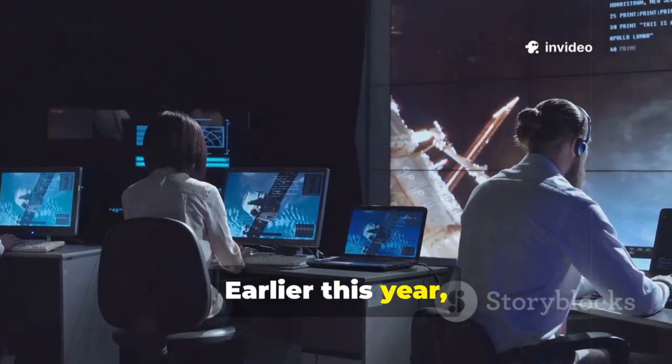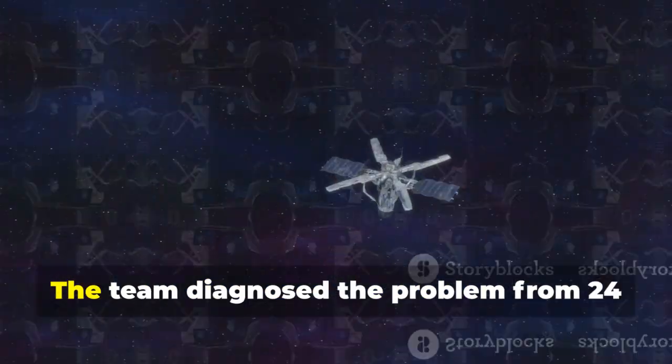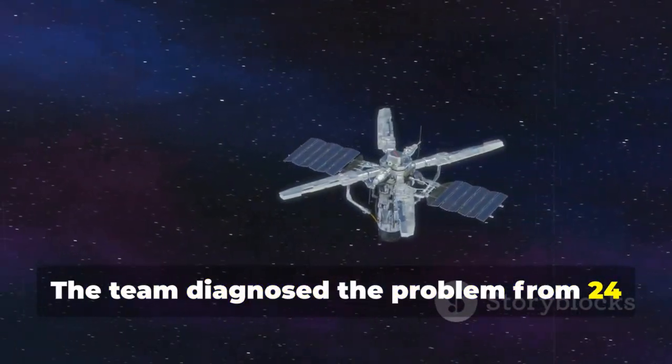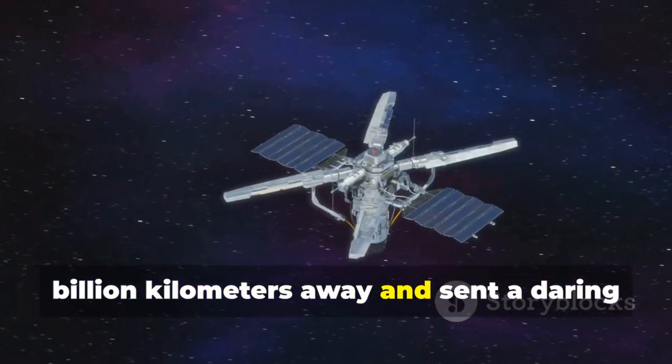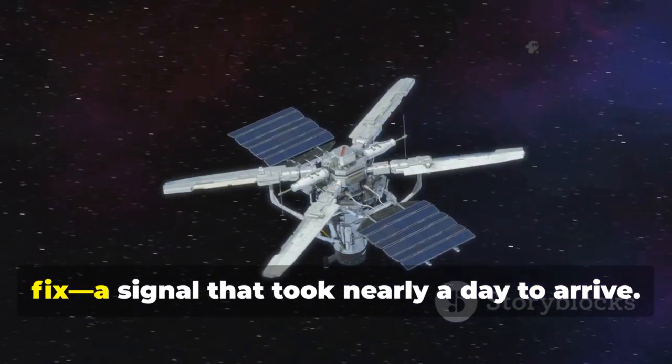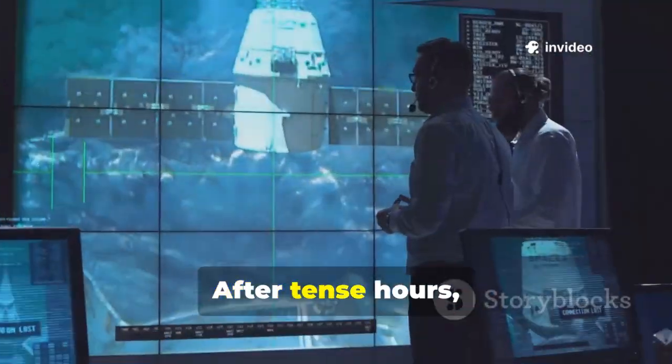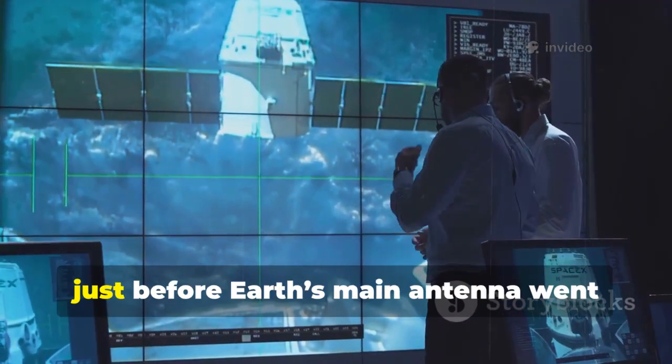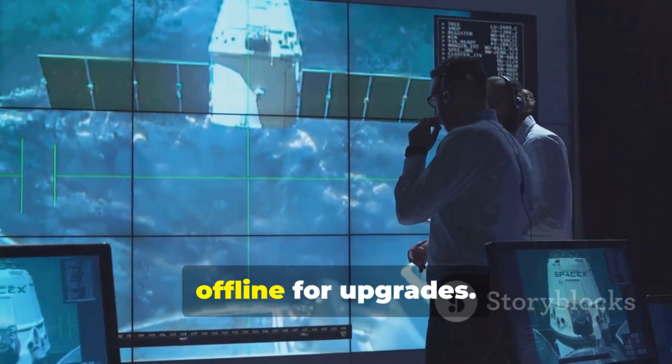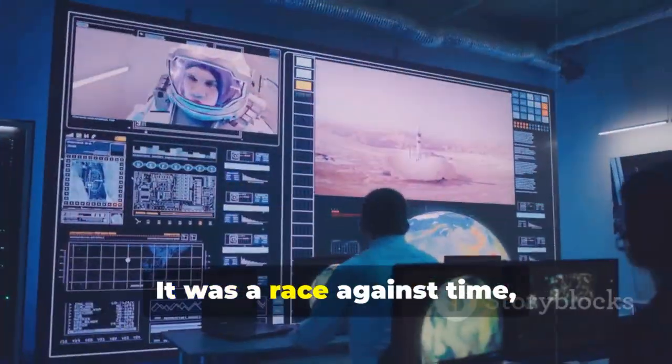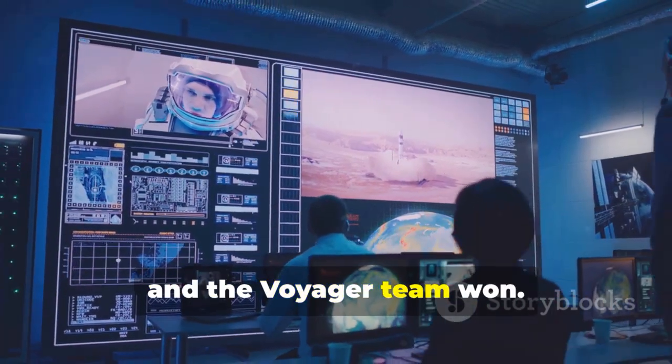Earlier this year, a thruster failure nearly ended the mission. The team diagnosed the problem from 24 billion kilometers away and sent a daring fix, a signal that took nearly a day to arrive. After tense hours, the thrusters came back online just before Earth's main antenna went offline for upgrades. It was a race against time, and the Voyager team won.